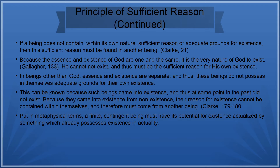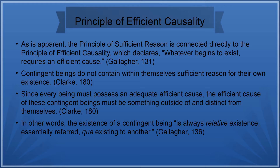In beings other than God, essence and existence are separate, and thus these beings do not possess in themselves adequate grounds for their own existence. This can be known because such beings came into existence and thus at some point in the past did not exist. Because they came into existence from non-existence, their reason for existence cannot be contained within themselves and therefore must come from another being. Put in metaphysical terms, a finite, contingent being must have its potential for existence actualized by something which already possesses existence in actuality.